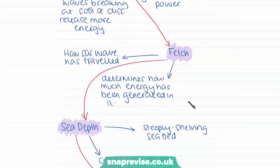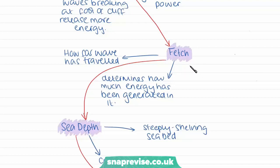Then we have fetch. Fetch relates to how far a wave has travelled over the ocean. Usually the longer a wave has travelled, the more energy it will have, because that energy hasn't been diluted by hitting other obstacles. So fetch determines how much energy the wave has generated over a longer distance, and a wave with more energy is going to have greater erosive power.